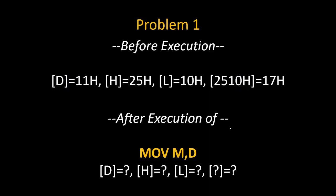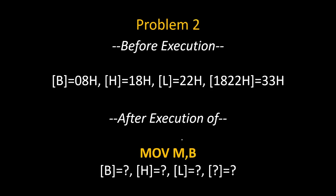Now here are some practice problems — solve them and give your answer in the comments. Problem 1: content of D register is 11H, content of H is 25H, content of L is 10H. Therefore, content of 2510H is 17H, and we executed instruction MOV M, D. After execution, what are the values of D, H, L, and that particular memory location? Problem 2: content of B is 08H, H is 18H, L is 22H. Therefore, on memory location 1822H, some random data 33H is there, and we executed instruction MOV M, B. After execution, what will be the content of B register, H register, L register, and the content of the memory location?